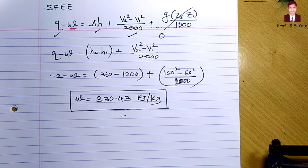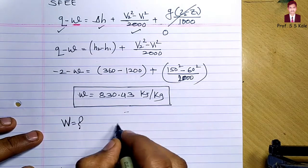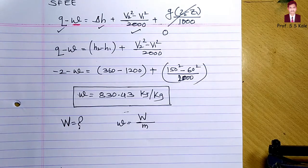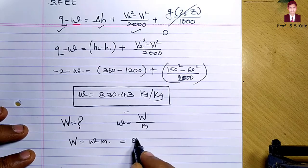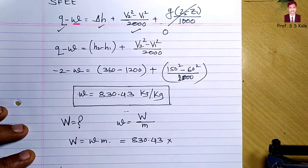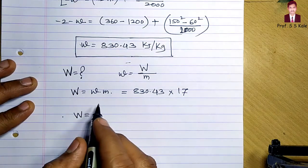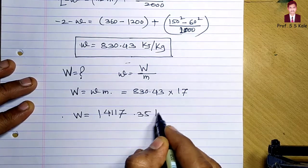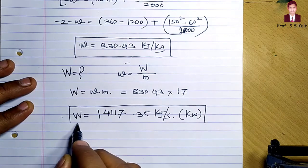Now converting to capital W (total power): small w = W / m, so capital W = small w × m = 830.43 × 17. With this multiplication, you get W = 14,117.35 kilojoule per second, which is 14,117.35 kilowatt. That is the work output generated by the turbine.